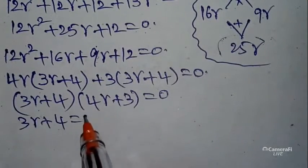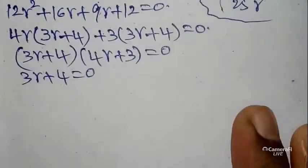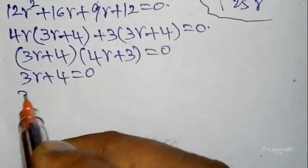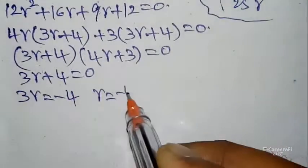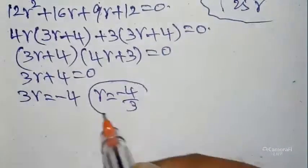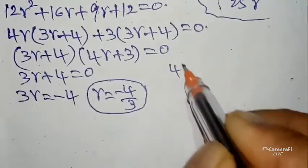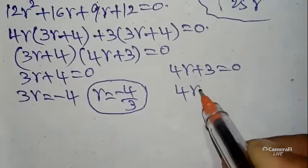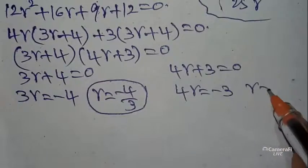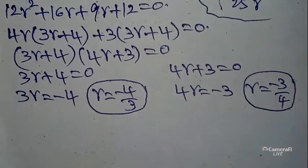From case 1: 3r + 4 = 0, so 3r = −4, therefore r = −4/3. From case 2: 4r + 3 = 0, so 4r = −3, therefore r = −3/4. We have found two values of r.